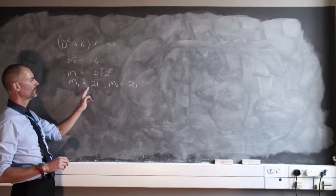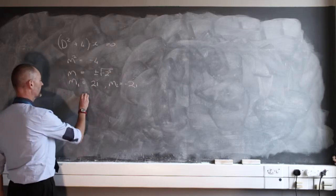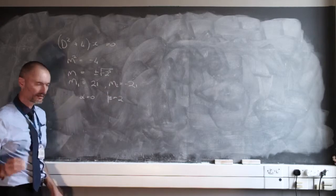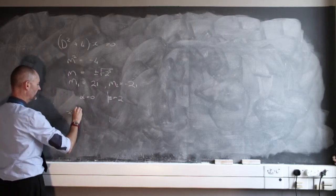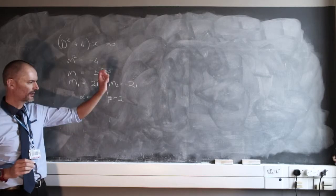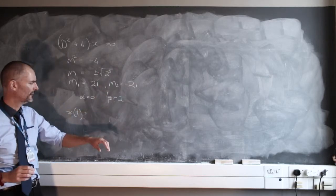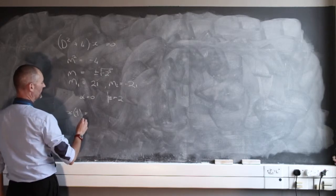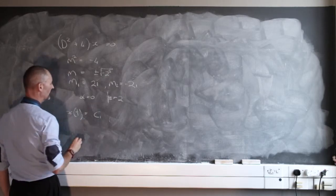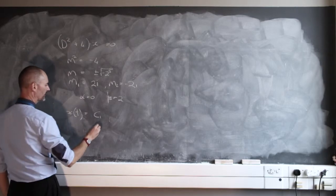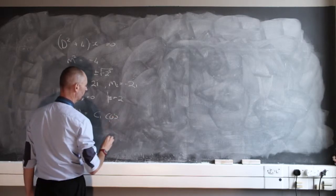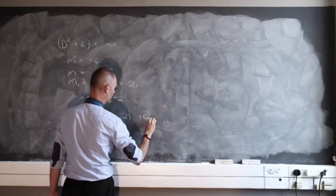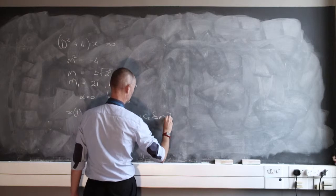This can be written as 0 plus 2i, so we'll have this alpha value being 0 and the beta value being 2. I can now write x of t, which means I can, at any time t, I can know exactly where my mass is going to be if it now oscillates, and that is going to be c sub 1 e to the power alpha, but that's 0. So that is just going to be the cosine of omega t, which is 2t, plus c sub 2 sine of omega t, which is 2t.